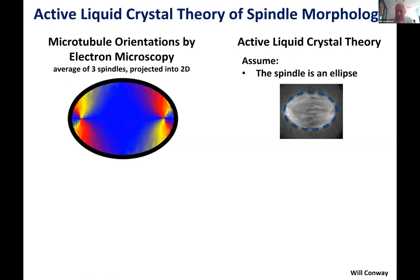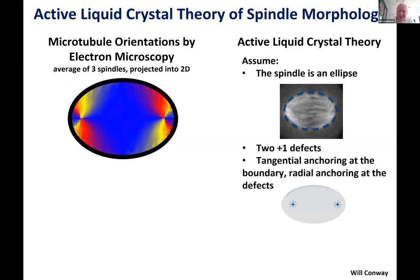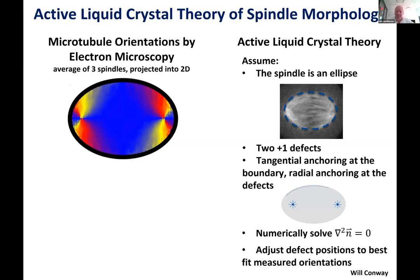Will set out to write down an active liquid crystal theory of microtubule orientation and spindle morphology and see if it actually describes the data. First, he assumes the spindle is an ellipse — because the spindle is an ellipse. Then he places two +1 defects where the centrosomes are, saying the microtubules want to radiate out from those. He also assumes microtubules want to orient parallel to the spindle surface.